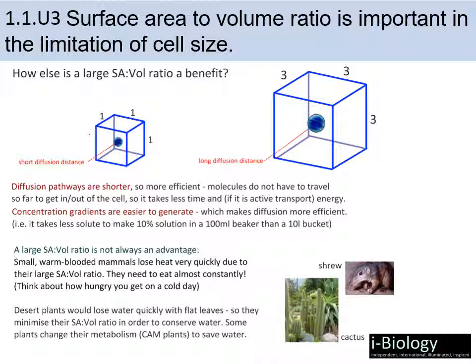This also becomes a problem with desert plants, which have a faster loss of water because of their high surface area to volume ratio. Desert plants try to roll their leaves to reduce surface area. The spikes on a cactus are not actually spikes — they're leaves rolled into a spike shape. This serves as a defense mechanism but also reduces the surface area of the leaf so that the plant doesn't lose water as quickly.